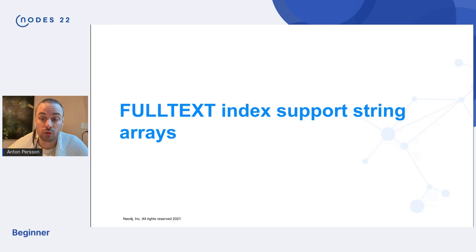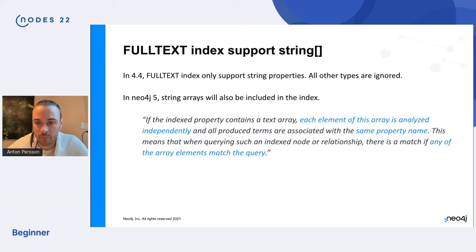Okay. And I noticed that I don't have so much time left. So let me just kind of skim over what's new with full text index. It's not so complicated. So I think we'll be fine. Basically it has support for string arrays. Yeah. So let's read what the documentation says. If the indexed property contains a text array, each element of this array is analyzed independently and all produced terms are associated with the same property name. So for example, the property paragraphs, if you have five strings in that array, all of those elements will be associated with the paragraphs key.